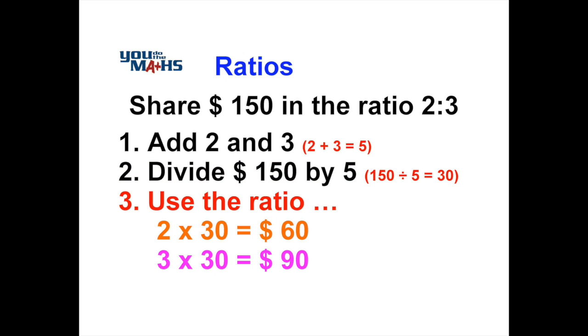So 150 divided by five is $30. We then distribute the money to the two people concerned. One person gets two lots of 30, which equals $60, and the other person gets three lots of 30, which is $90. If we've done it correctly, those two amounts should add up to $150. In this case they do.